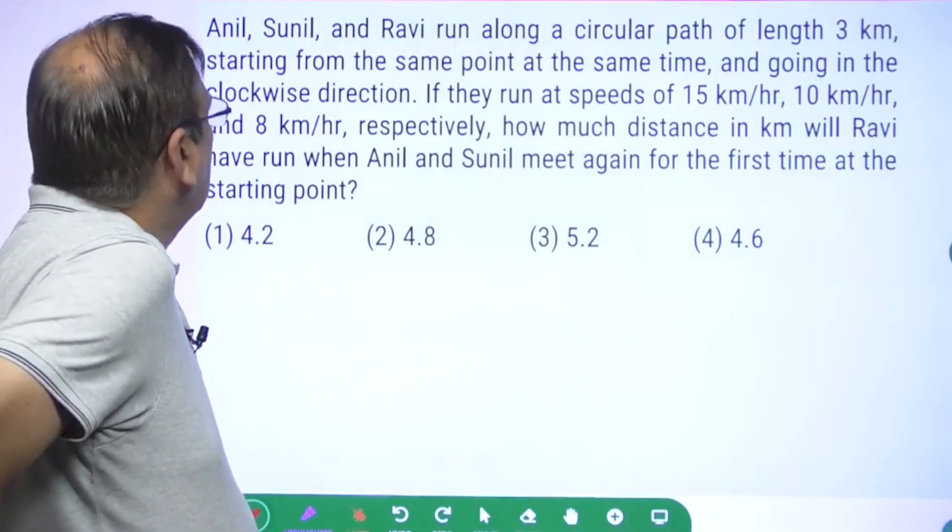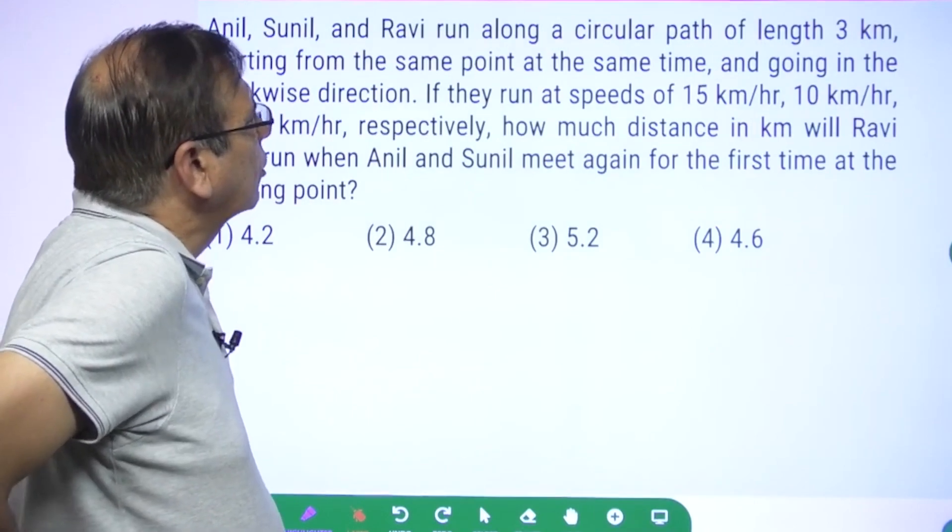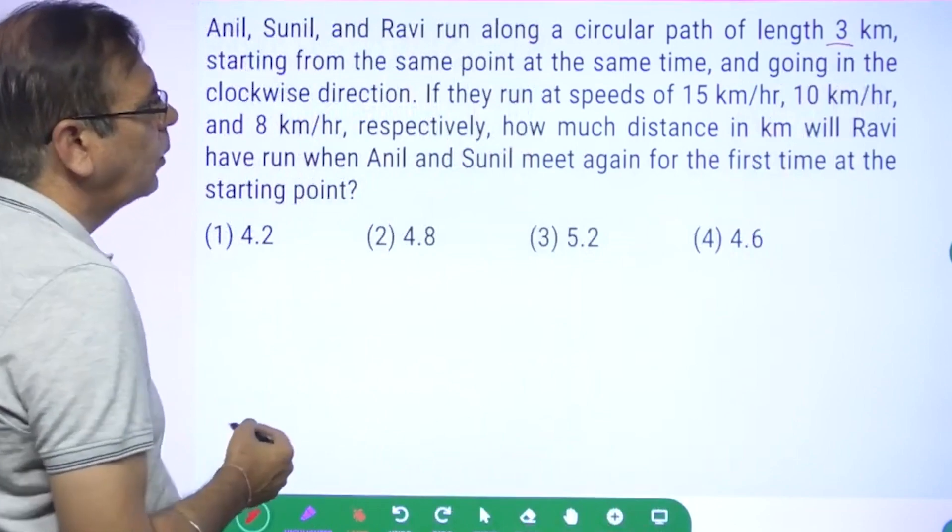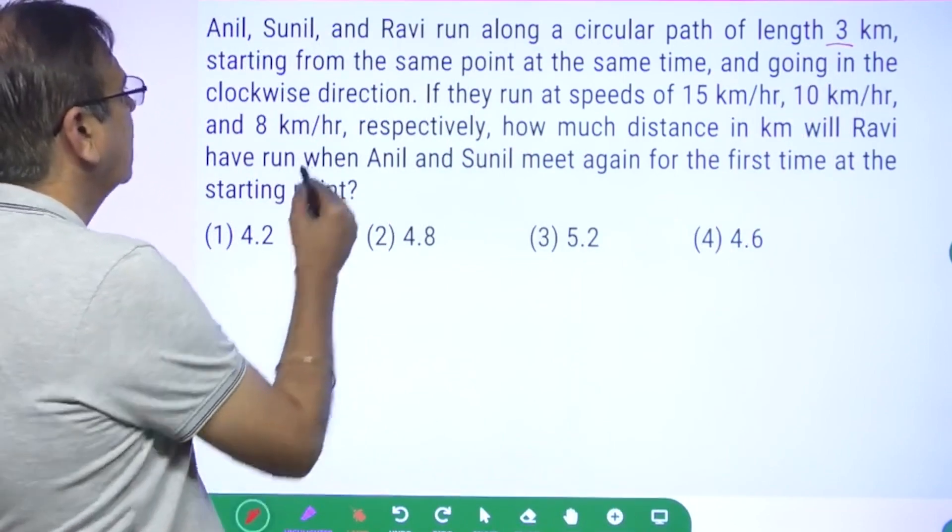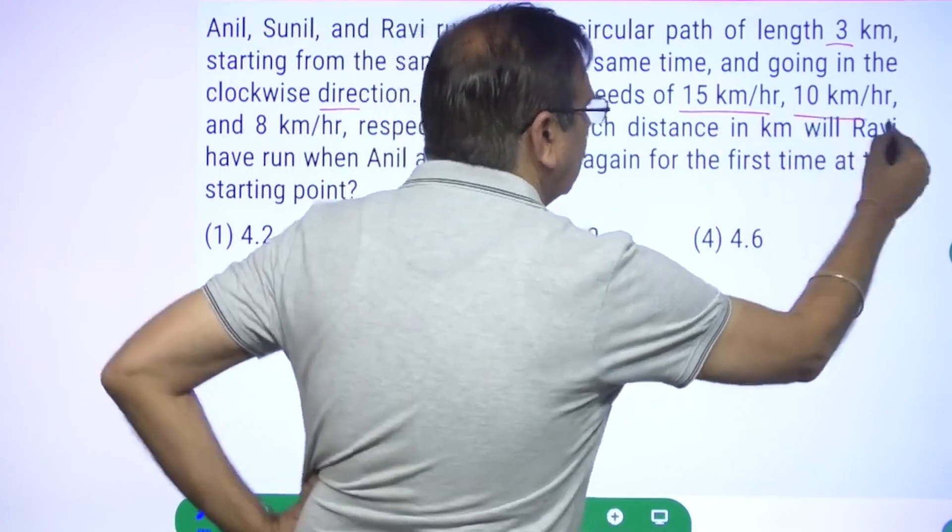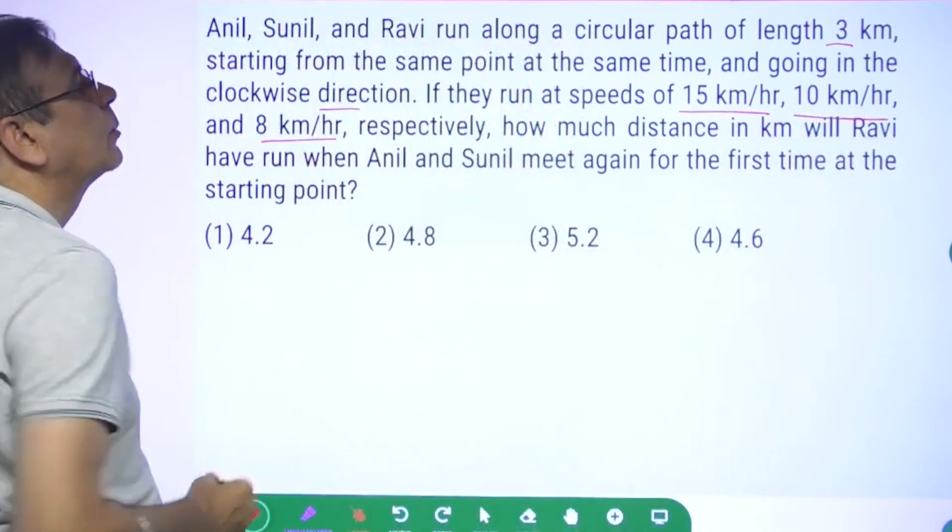Anil, Sunil, and Ravi run along a circular path of length 3 kilometers, starting from the same point at the same time and going in the clockwise direction. If they run at speeds of 15 km/hr, 10 km/hr, and 8 km/hr respectively...